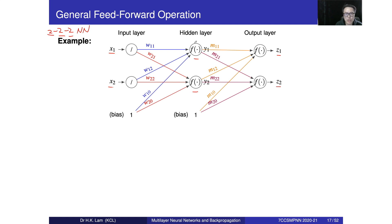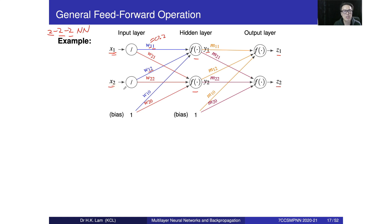Following the blue line, we have a link from x1 to hidden node 1 — we call this w11, the connection weight. For example, this value may be 0.2. The first subscript in w11 means it connects to the first hidden node, and the second subscript means it connects to the first input x1. The same idea applies to w12: the first subscript connects to the first hidden node, and the second connects to the second input x2.